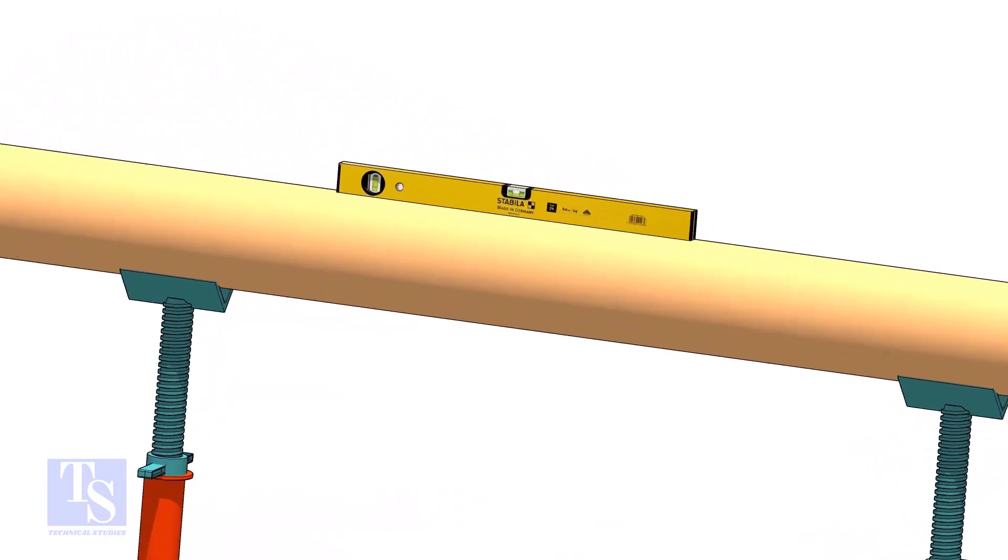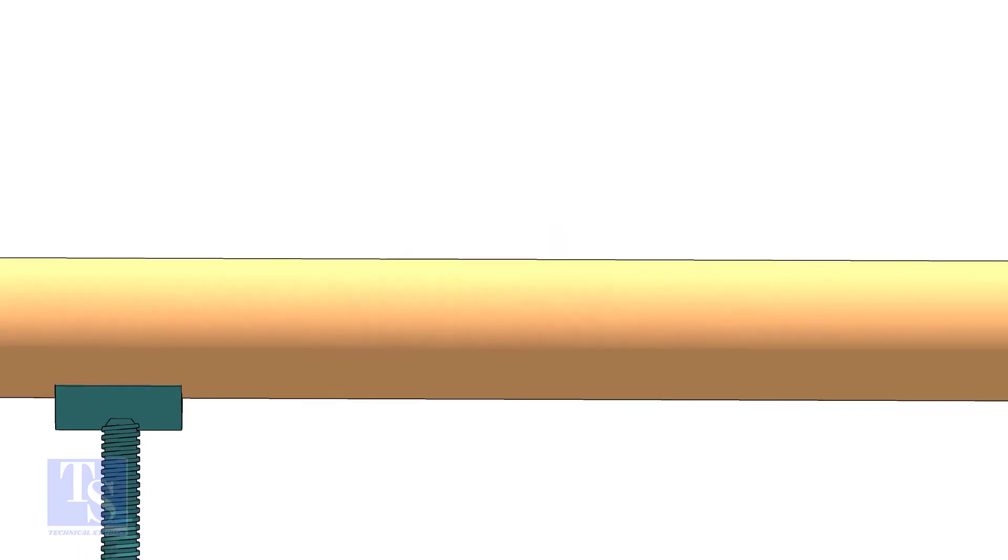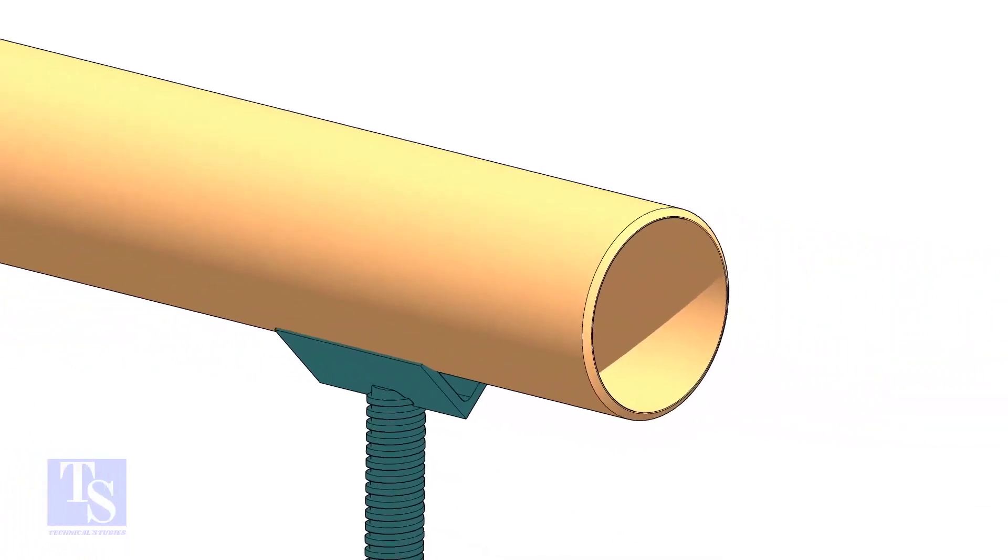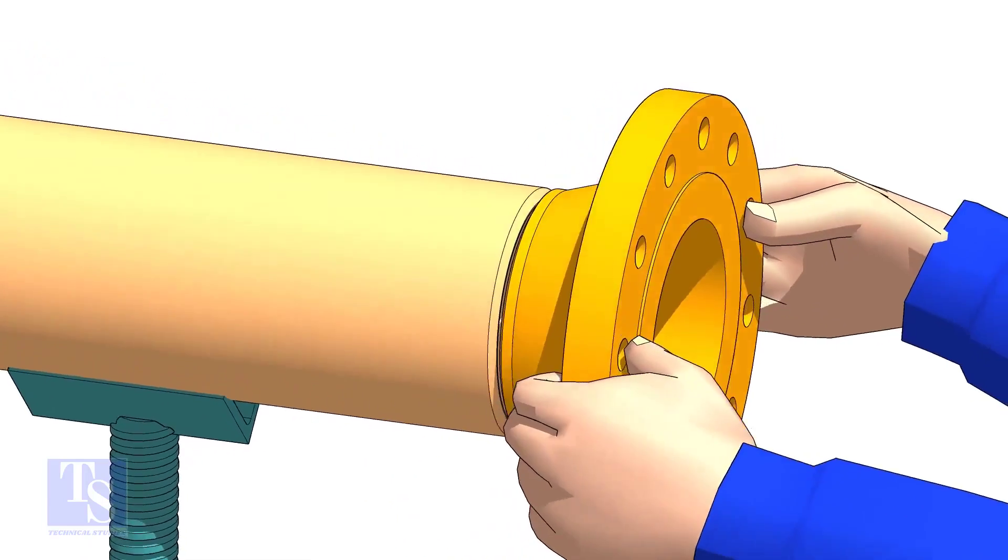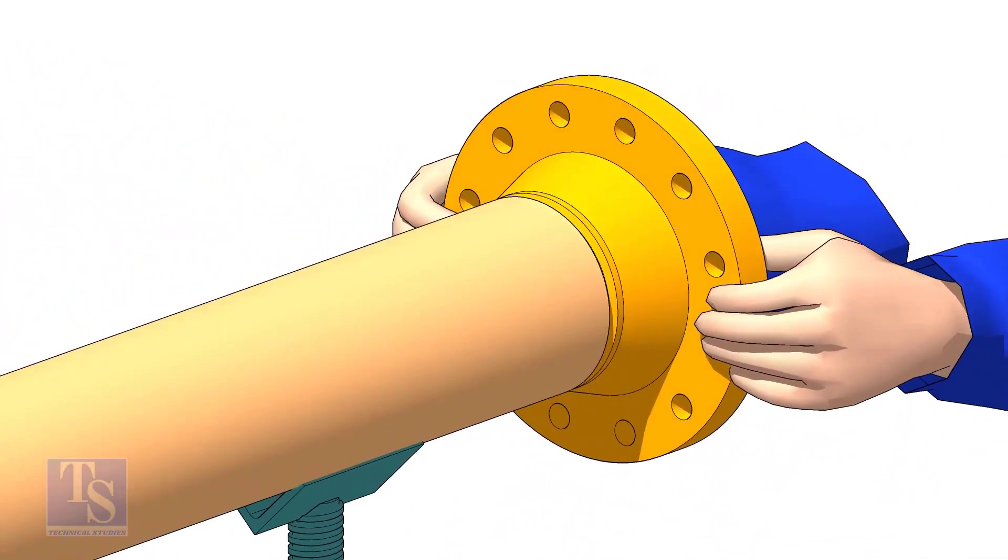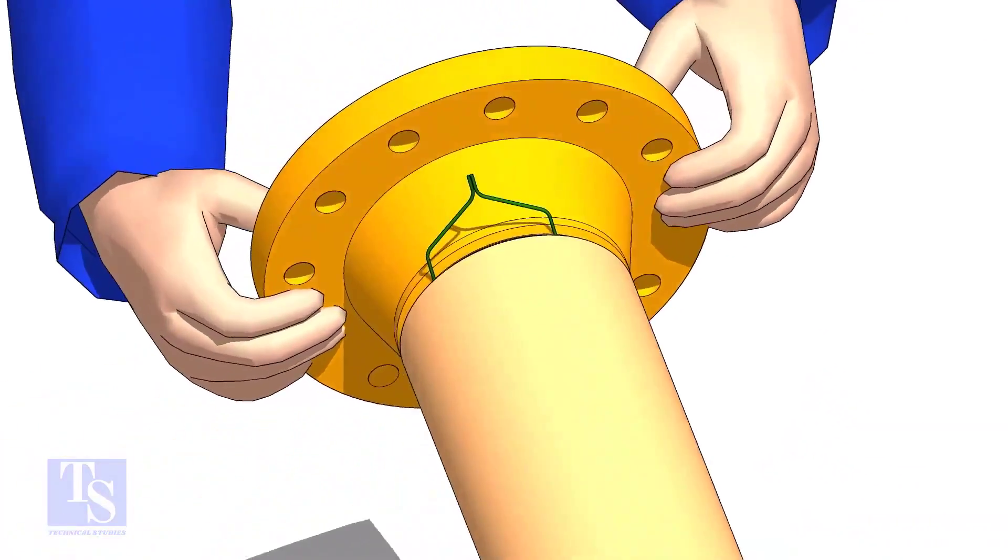Level the pipe. Hold the flange on the pipe face as shown. Put the gap rod in the joint. Look through the flange and the pipe, and adjust the overlap.